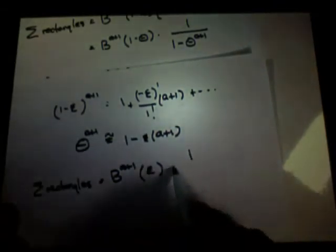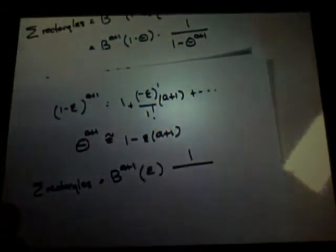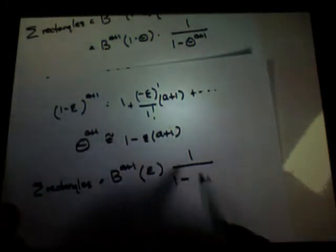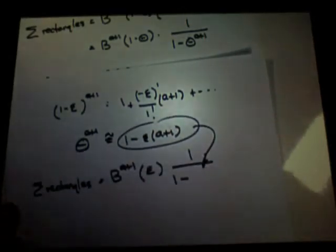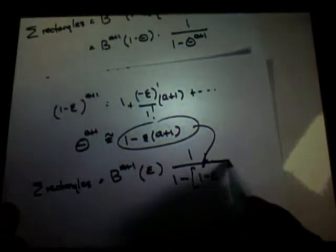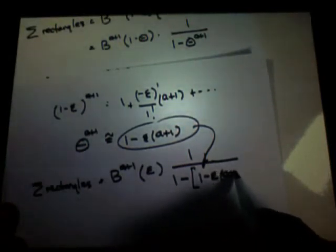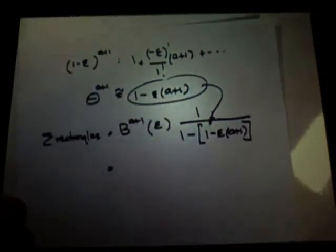And then one over one minus theta to the a plus one is one minus this. This goes here. One minus epsilon times a plus one. I think we did it.